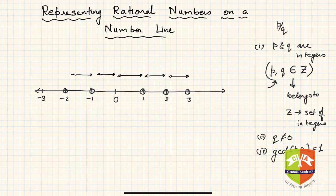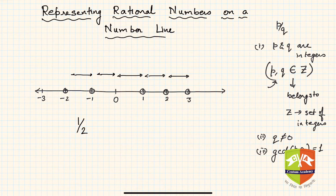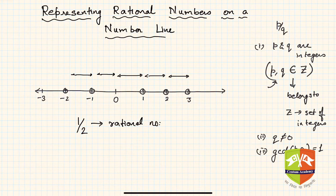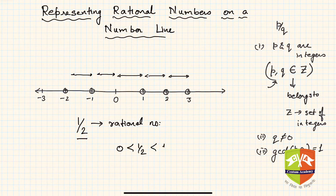Now let us say I have to represent one upon two. Is it a rational number? Definitely — it's a fraction and a rational number. By definition: one and two are integers, two is not equal to zero, and the GCD or HCF of one and two is one. Half is greater than zero but less than one, so its position must be somewhere between zero and one.